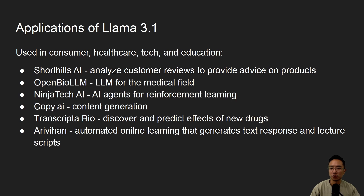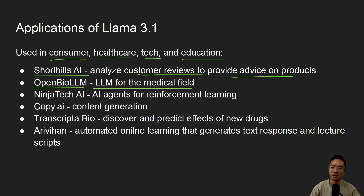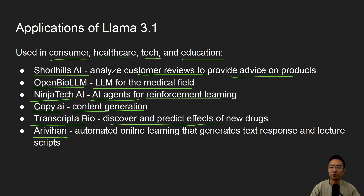Let's take a look at some applications you could use with Llama 3.1. If you're trying to integrate an LLM into your business, here are some current applications across consumer, healthcare, tech, and education industries. Shorthills AI analyzes customer reviews to provide product advice. OpenBio LLM is an LLM for the medical field. Ninja Tech AI is an AI agent good for reinforcement learning. Copy.ai is used for content generation. TranscriptaBio discovers and predicts effects of new drugs. And one more automates online learning by generating text responses and lecture scripts.